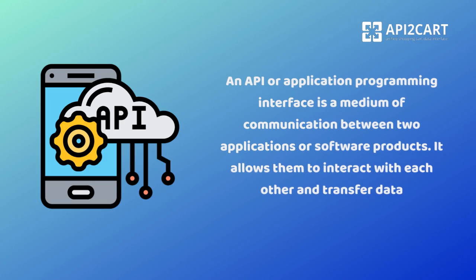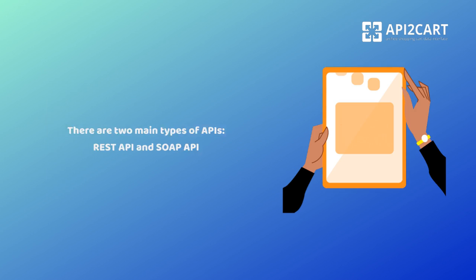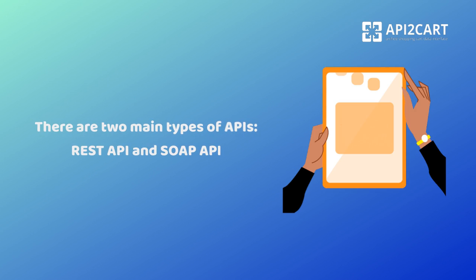An API, or Application Programming Interface, is a medium of communication between two applications or software products. It allows them to interact with each other and transfer data. There are two main types of APIs: REST API and SOAP API.